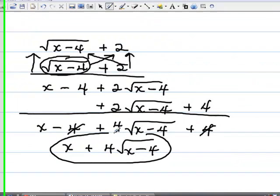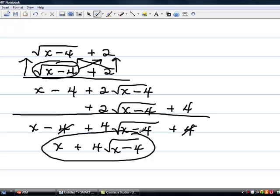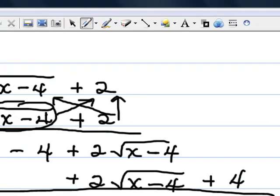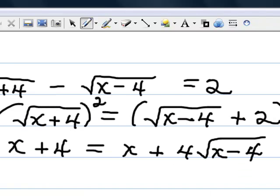That's our scrap work. So x plus 4 times the square root of x minus 4 is what's going to go on the right-hand side of our equation. Now we're going to go back to our other page. We've just written what we found on our scrap piece of paper on the right-hand side of the equation in place of where we were doing our work.